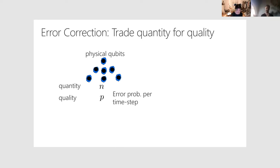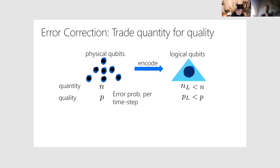So the basic idea of quantum error correction is encapsulated in this picture. We know that the qubits we have — represented by black disks here — are going to be noisy, represented by these little blue clouds around them. The idea is that we accept they're going to be noisy, but we can hope that by using a large number of them, we can trade many noisy physical qubits for a single much less noisy logical qubit. The logical qubit is what we will run the quantum computer on — the number of logical qubits will be less than the physical qubits we start with, but the probability of each failing will also be less.